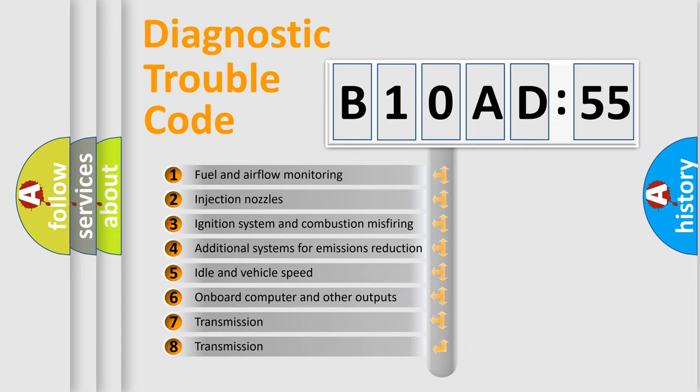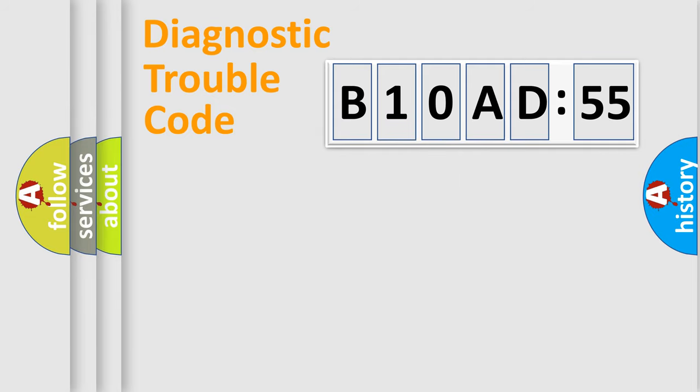The third character specifies a subset of errors. The distribution shown is valid only for the standardized DTC code. Only the last two characters define the specific fault of the group.